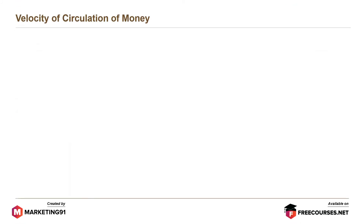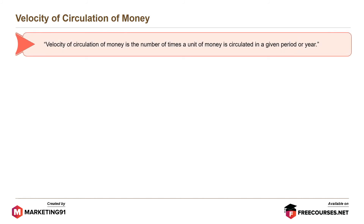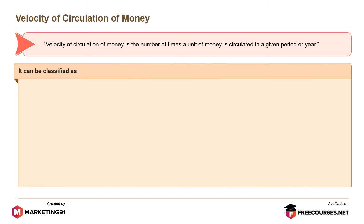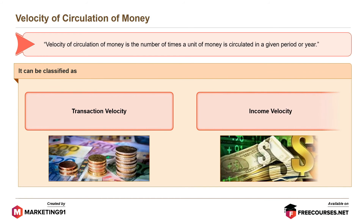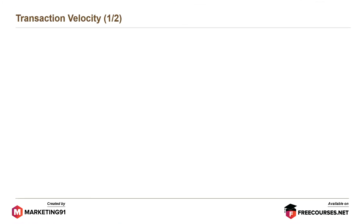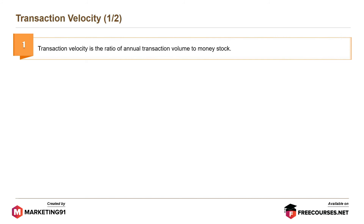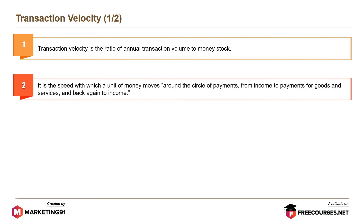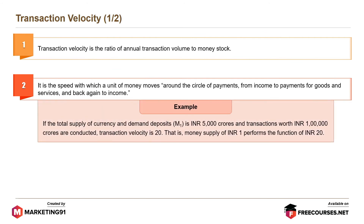Velocity of Circulation of Money is the number of times a unit of money is circulated in a given period or year. It can be classified as Transaction Velocity and Income Velocity. Transaction Velocity is the ratio of annual transaction volume to money stock — it is the speed with which a unit of money moves around the circle of payments from income to payments for goods and services and back again to income. For example, if the total supply of currency and demand deposits M1 is Rs. 5,000 crores and transactions worth Rs. 1,00,000 crores are conducted, Transaction Velocity is 20, meaning money supply of INR 1 performs the function of Rs. 20.